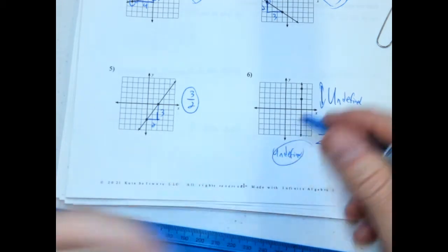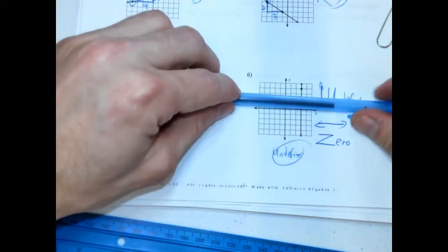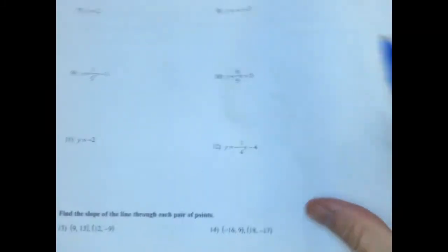It's a little note that helps. If you see one that's going flat across like this, that would be a zero slope. All right. Let's check these out.